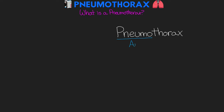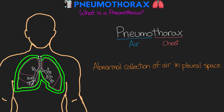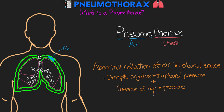If we break the word down, we have pneumo meaning air and thorax meaning chest. Essentially, this is an abnormal collection of air in the chest, or more specifically, in the pleural space. As you can see here, we have our patient, their thorax and their lungs, and the over-exaggerated pleural space. This air disrupts the normal relatively negative intrapleural pressure, which is what's resisting that elastic recoil force of the lung tissue, keeping them expanded and against the chest wall.